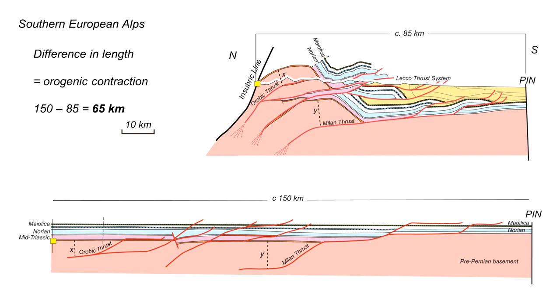The restored section has a length of about 150 kilometers and the equivalent geology has been squashed together to make a cross-section of 85 kilometers across. Subtract 85 from 150 and we see that we've got a 65 kilometer orogenic contraction here.